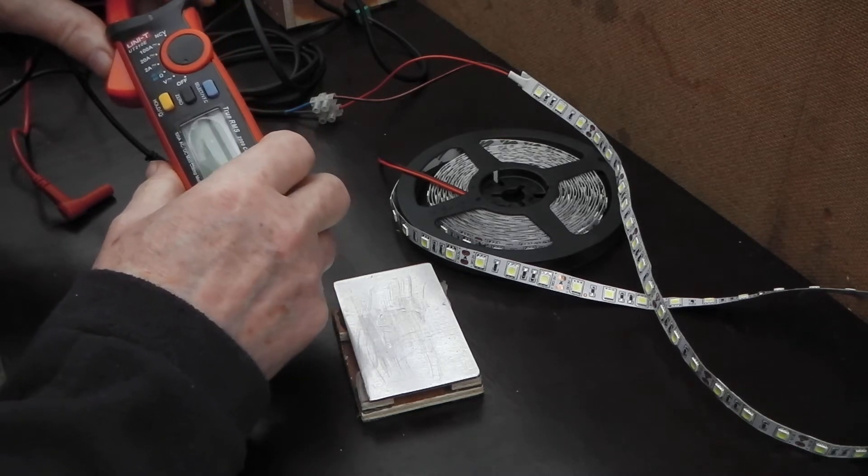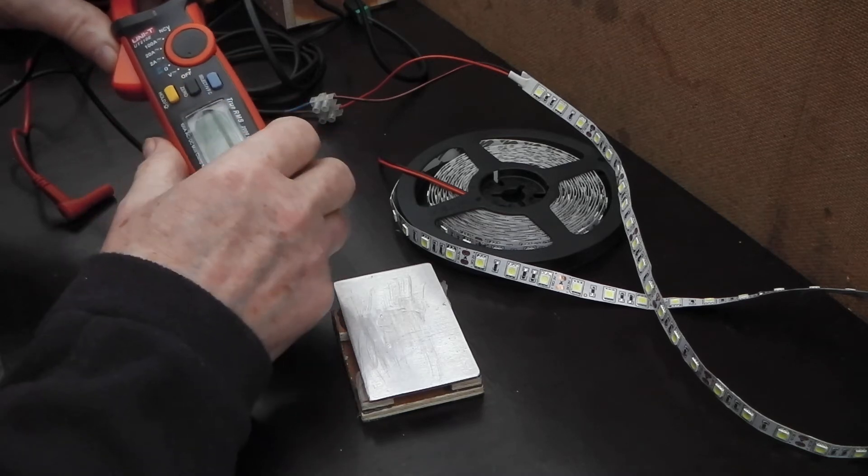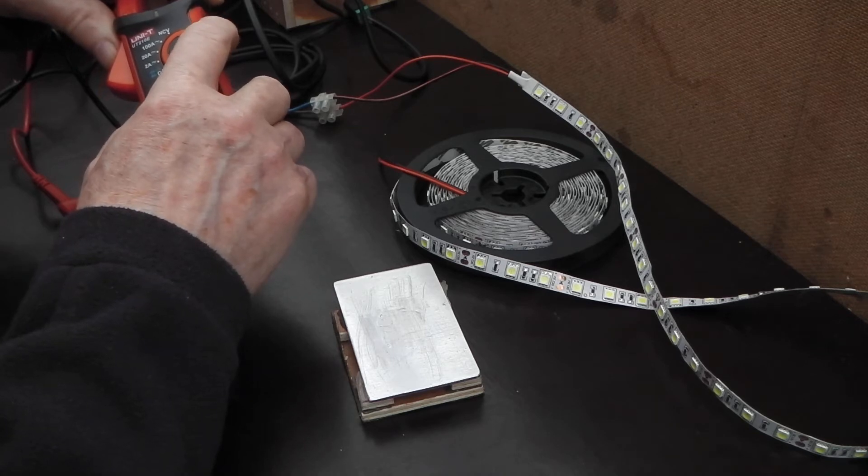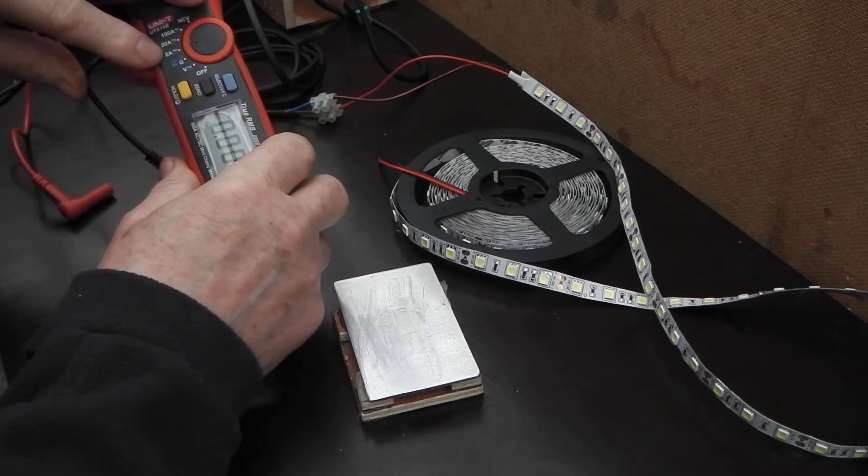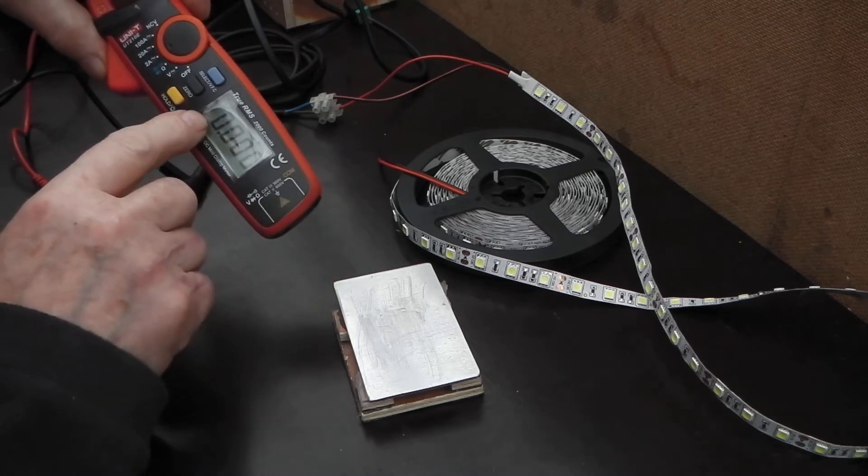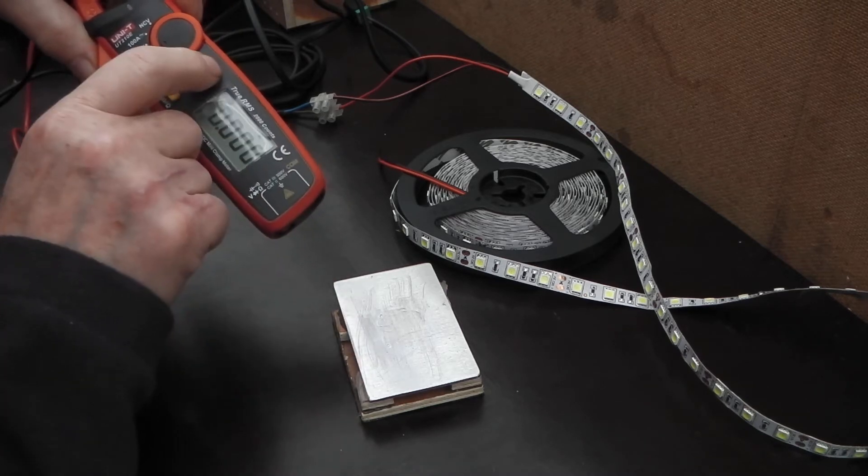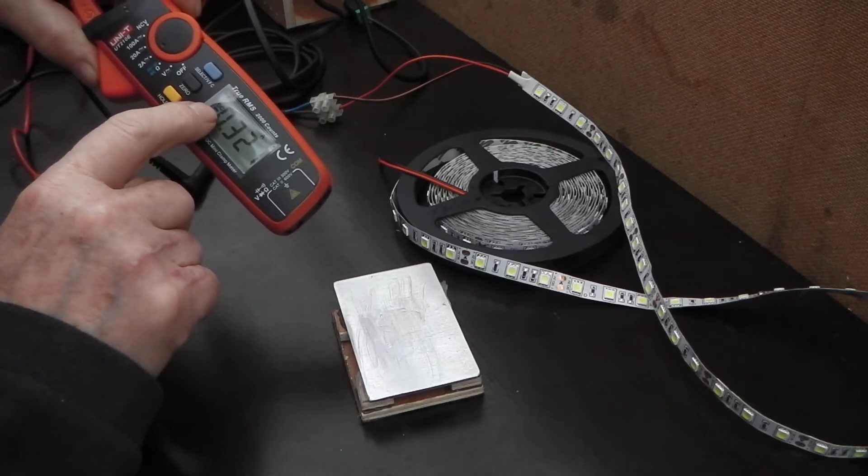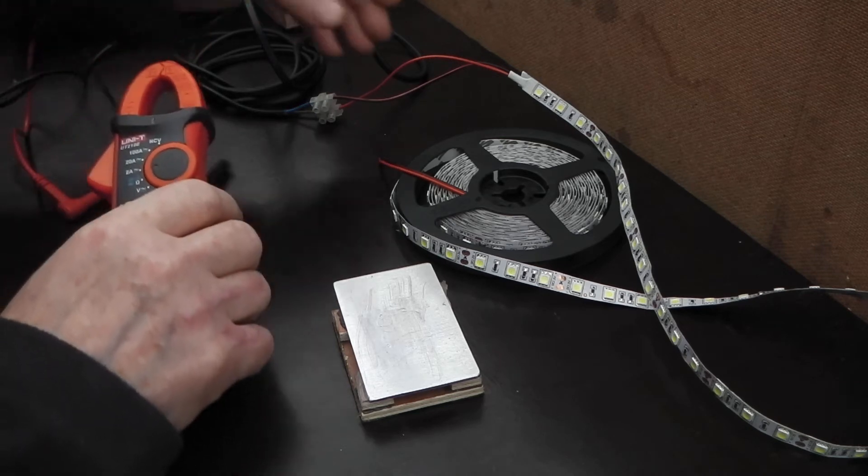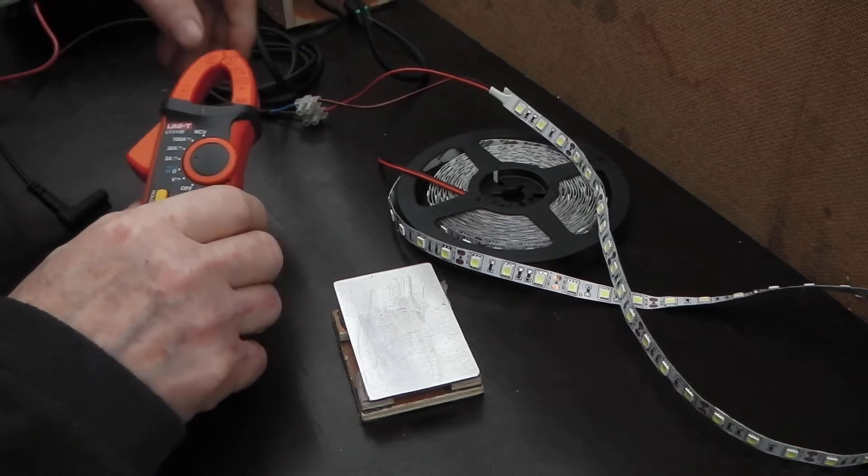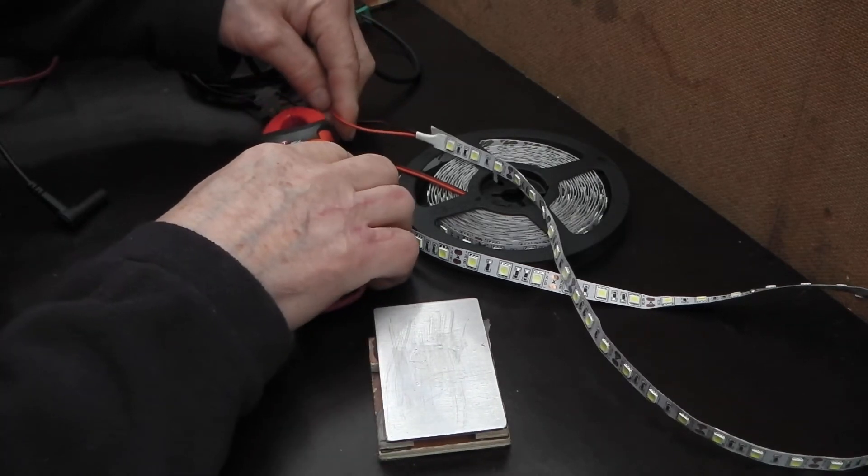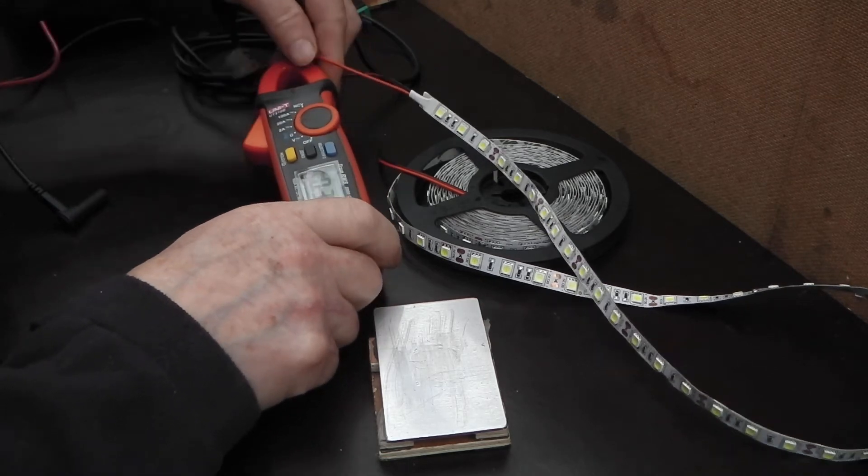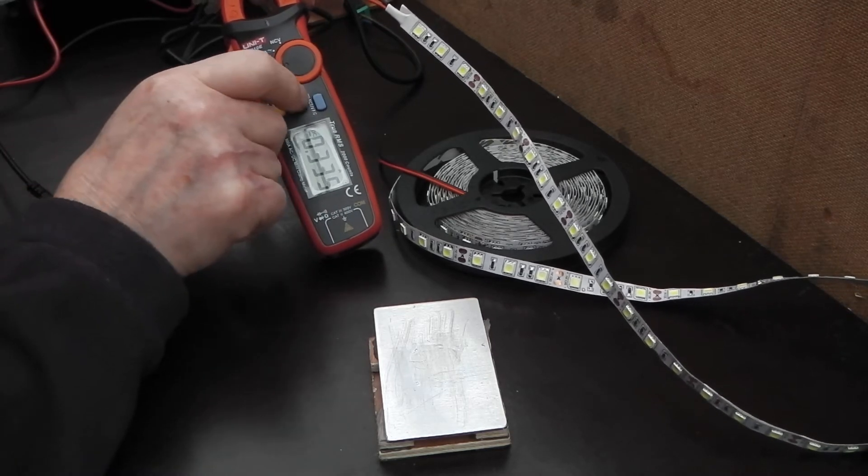The main reason I bought it is for the DC amps function. I will turn it onto the 2 amp. It automatically comes onto AC, you've got to press the blue button to switch it to DC. They say when you use the meter, you're supposed to put it up close to where you're going to measure and then zero it.